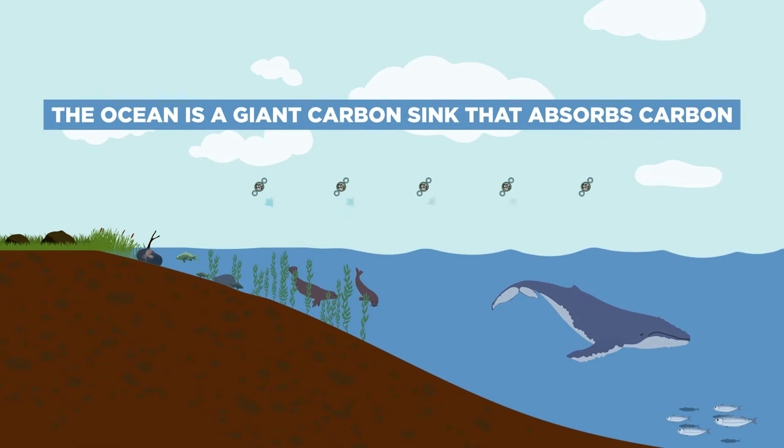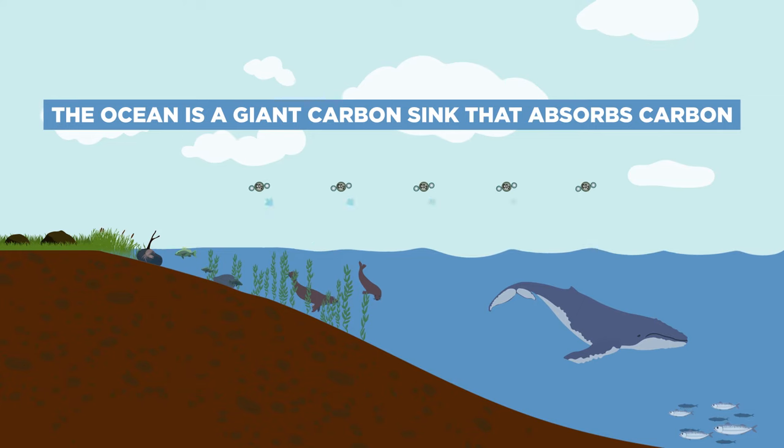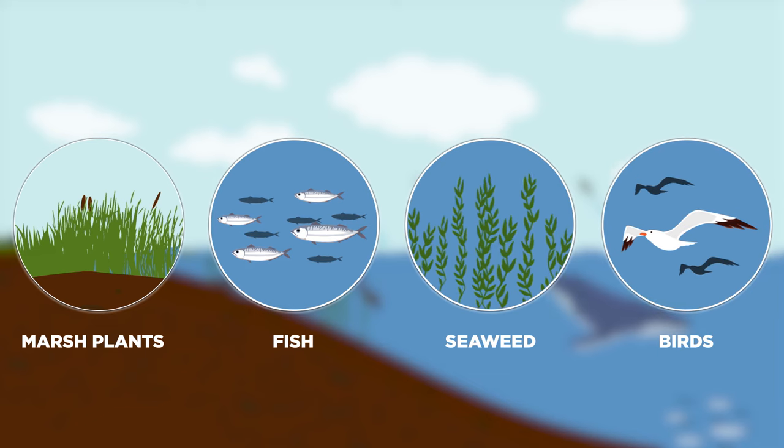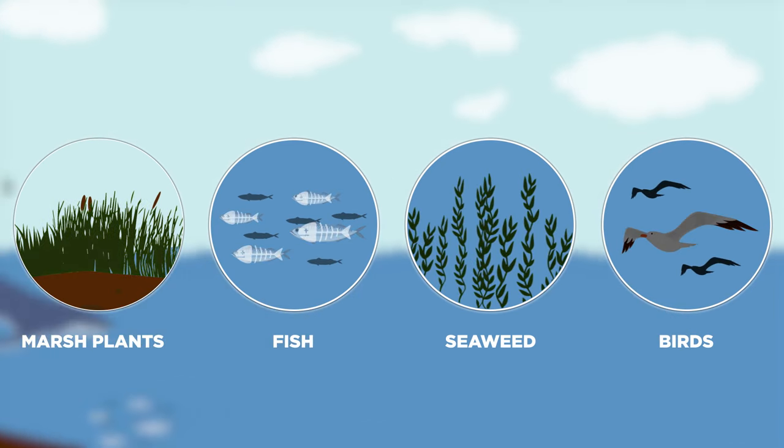The ocean is a giant carbon sink that absorbs carbon. Marine organisms from marsh plants to fish, from seaweed to birds, also produce carbon through living and dying.